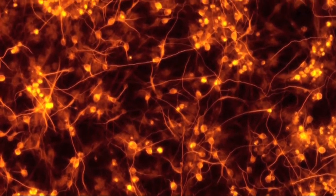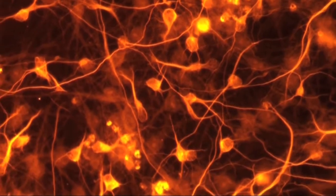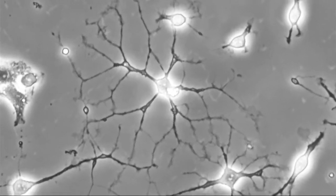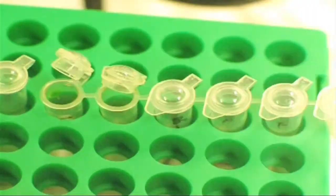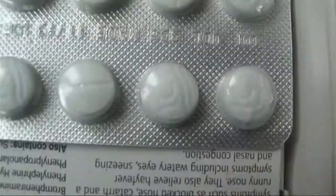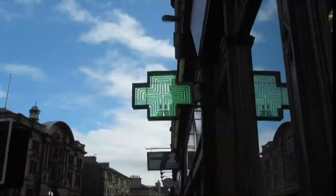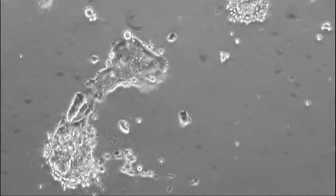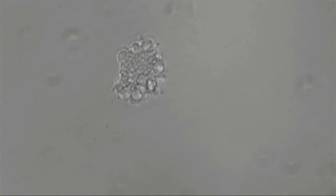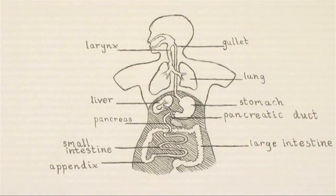Große Mengen dieser im Labor erzeugten menschlichen Zellen schaffen die Grundlage für verbesserte Testsysteme für neue medizinische Behandlungen und könnten so dazu beitragen, die Zahl der Tierversuche zu reduzieren. Dieselben Zellen können uns auch dabei helfen zu verstehen, was mit Zellen passiert, die von komplexen Krankheiten wie Alzheimer, Parkinson und Diabetes betroffen sind.